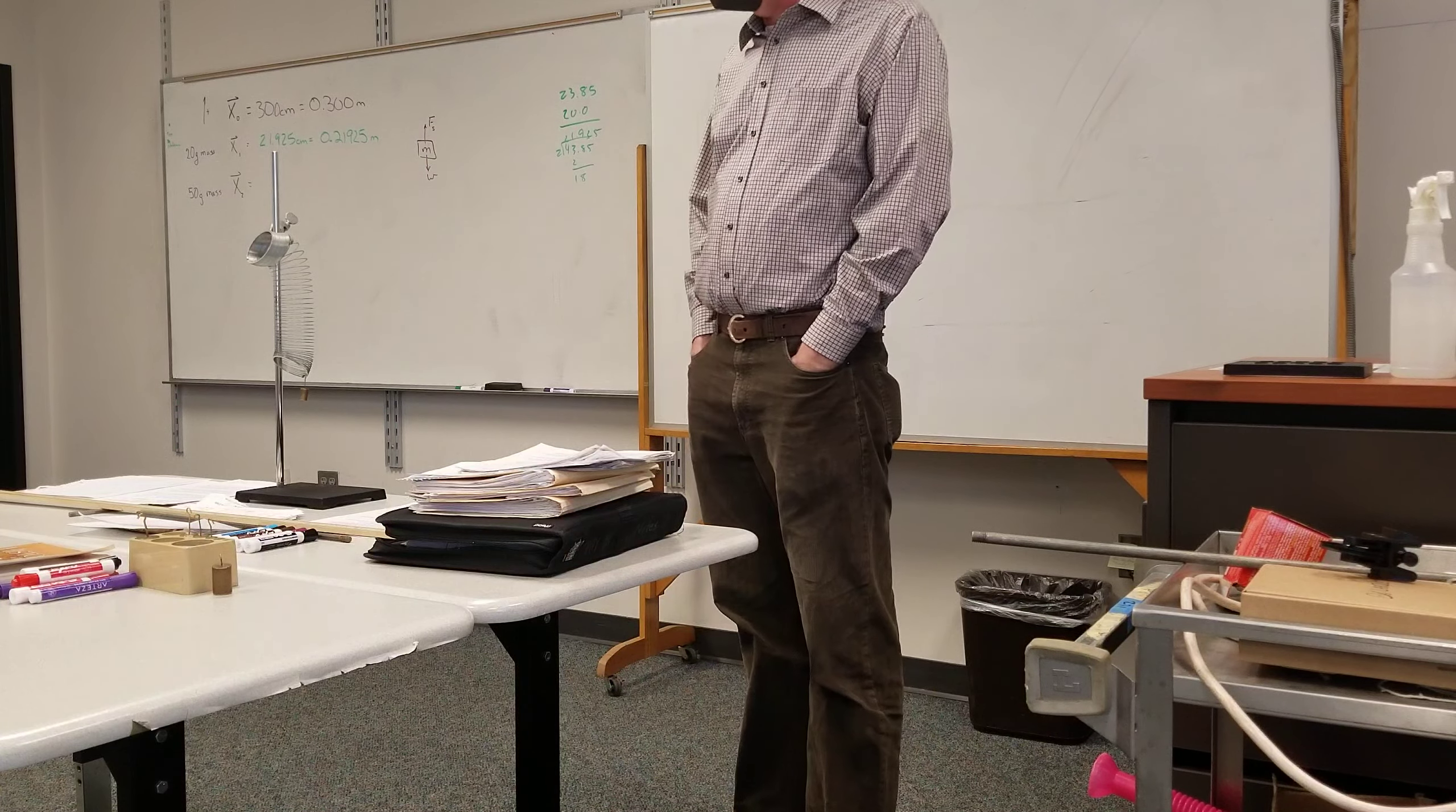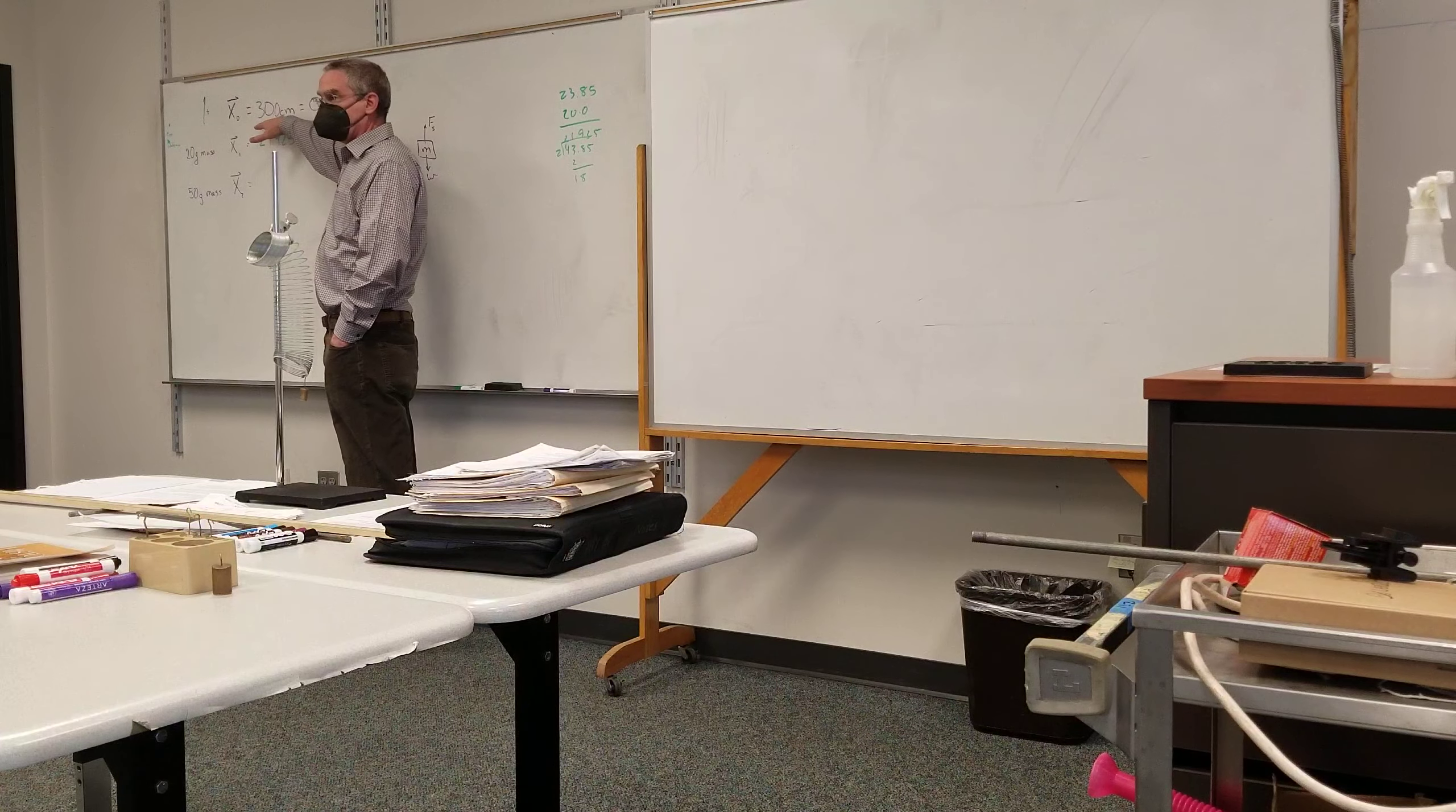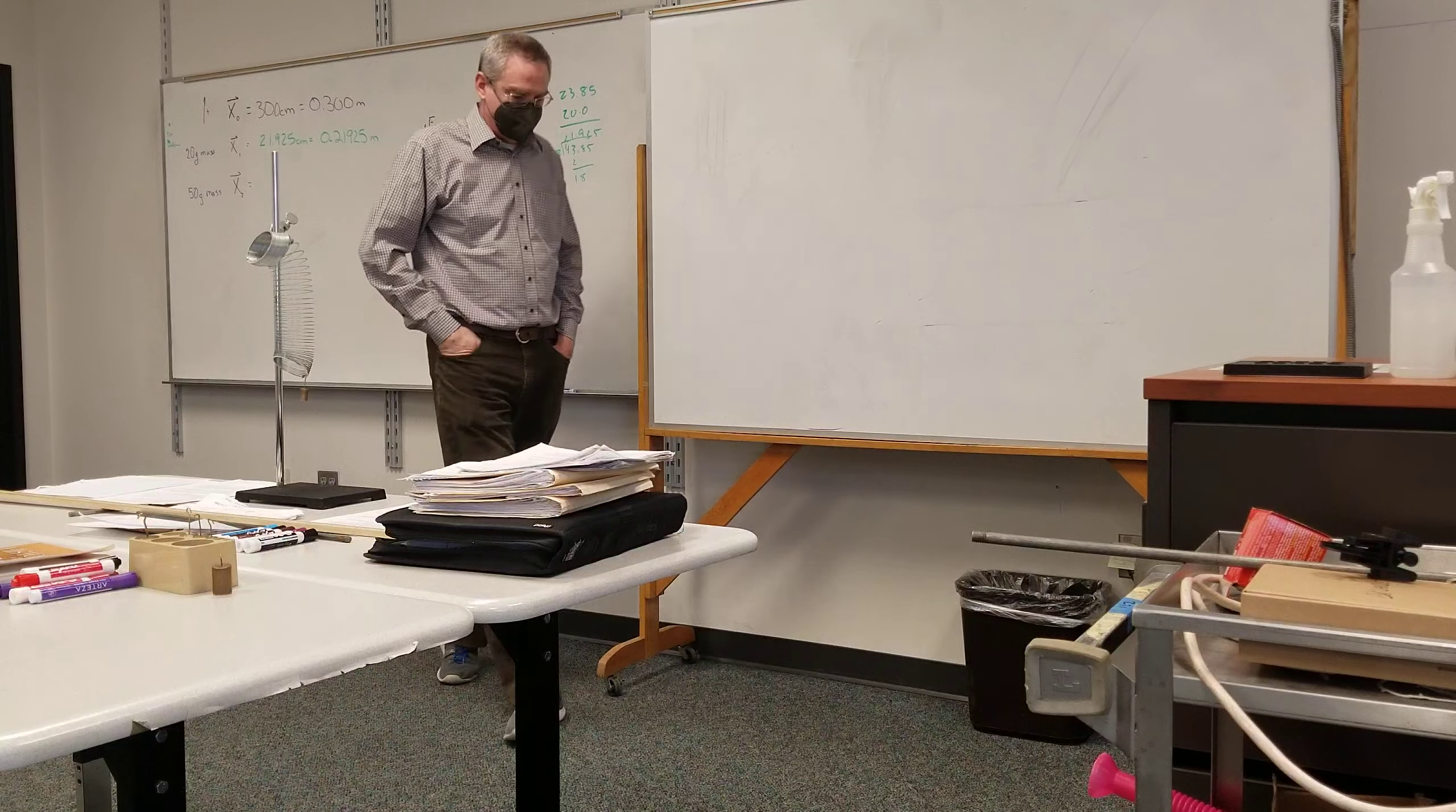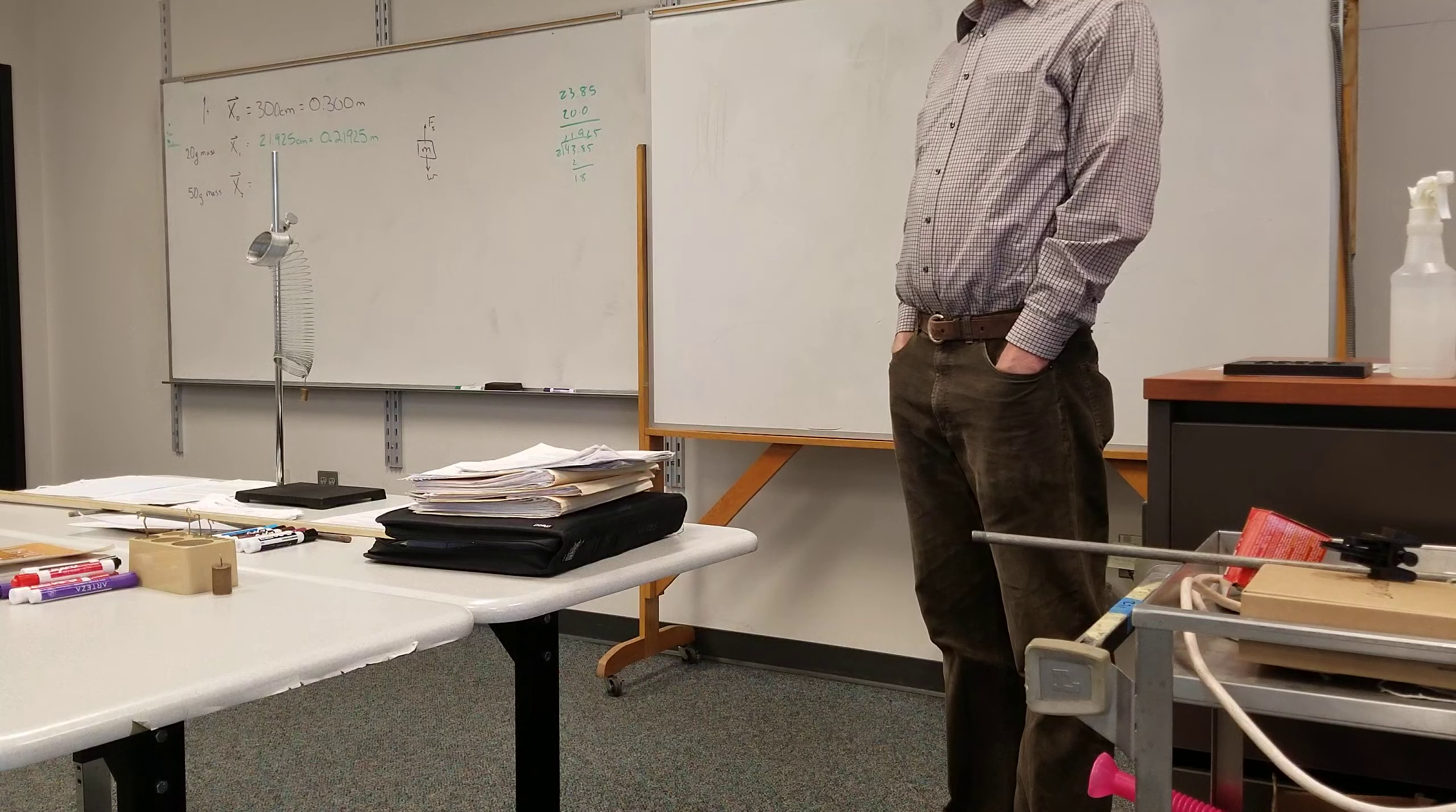All right. We're rolling. All right, so I basically have a slinky here that's dangling, not touching the rod at all, just being held up here. And I've got a 20-gram mass hanging on it. I'm just going to trust that it's 20 grams for the sake of this. When there was nothing on it, the bottom of the slinky was at 30 centimeters. I put the 20-gram mass on it, and the new position of that bottom rung is 21.925 centimeters.